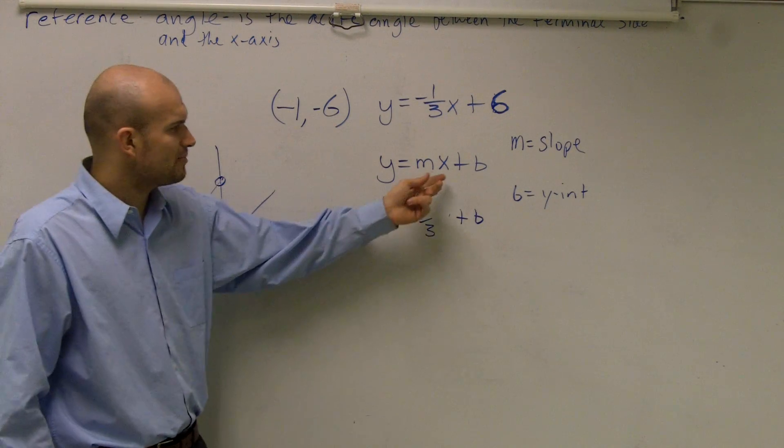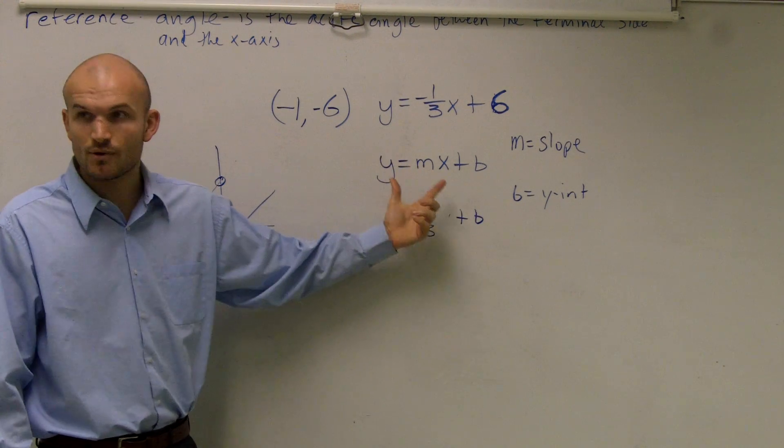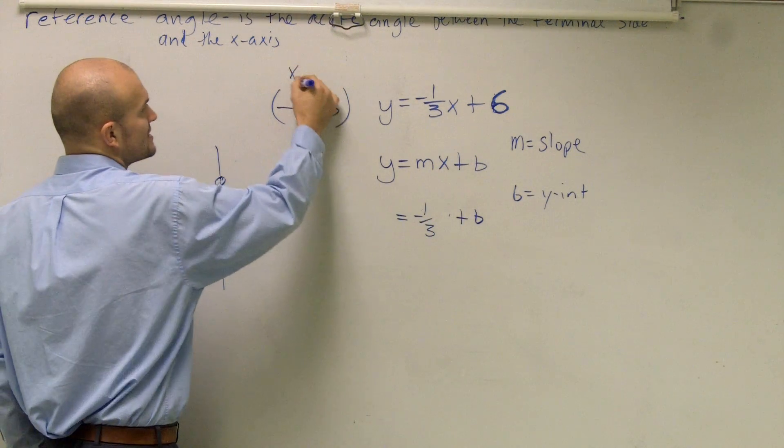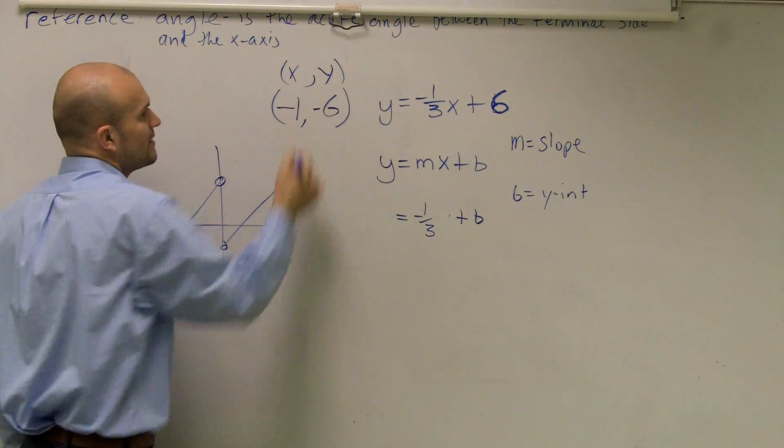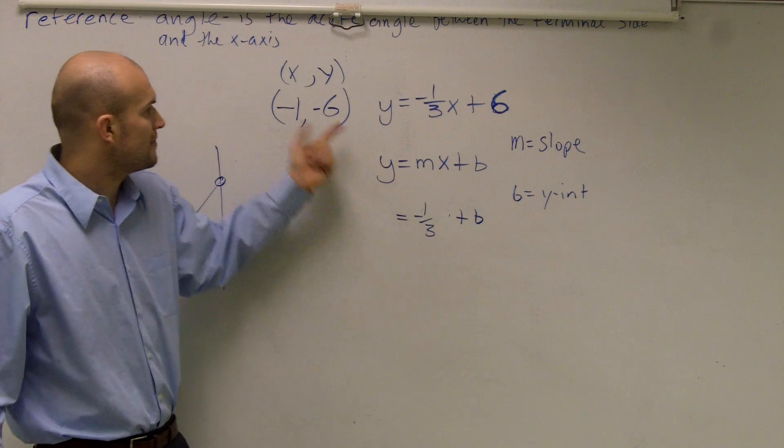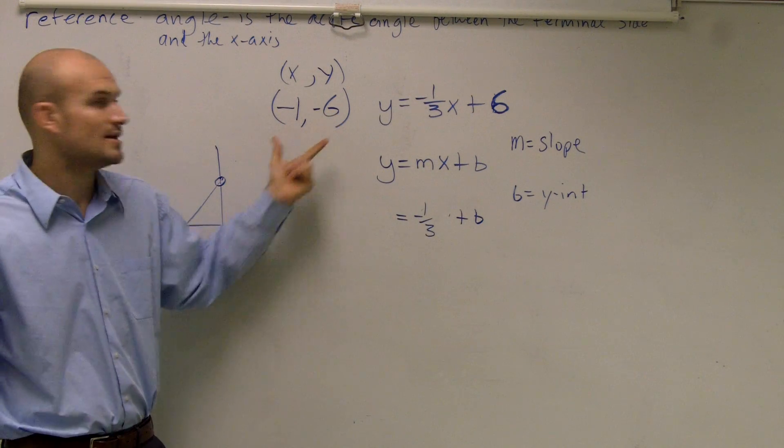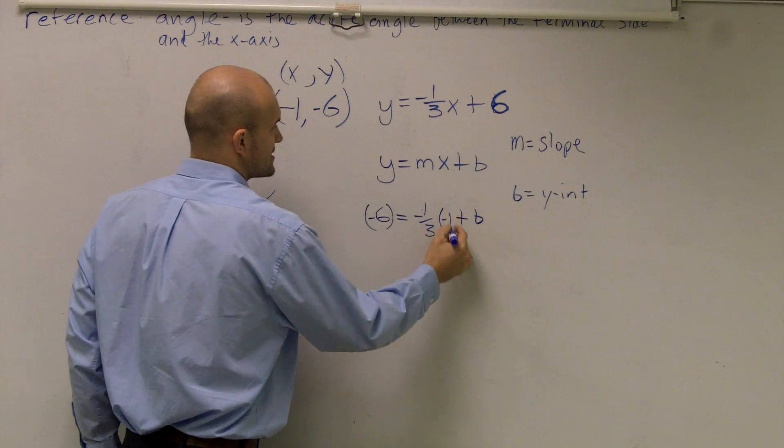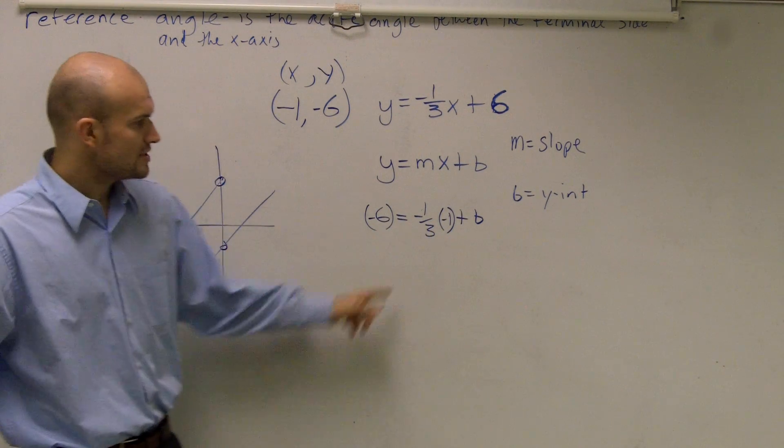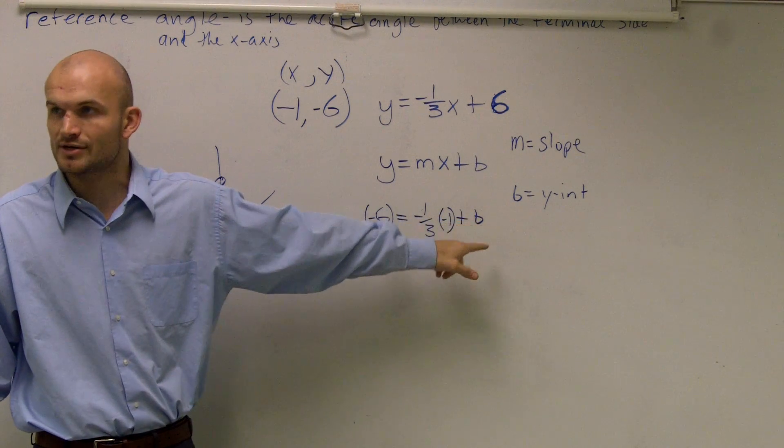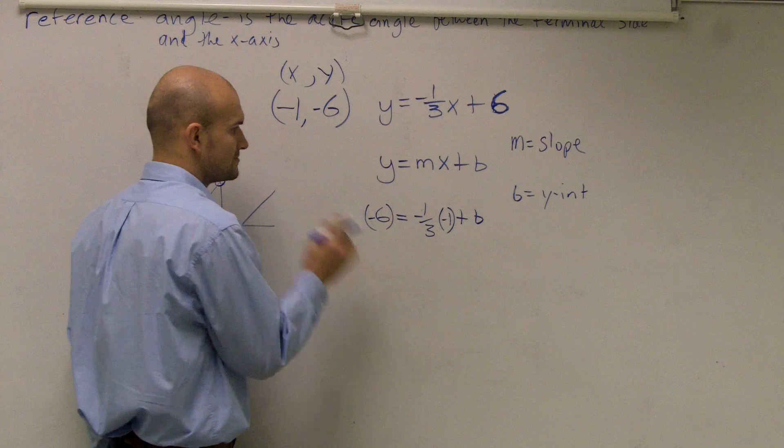Now, you might say, well, what can we plug in for X and Y? Remember, X and Y represent coordinate points on that line. Well, the problem says, I want to find a parallel line, that means it has the same slope, that goes through this point. That means you can write in these coordinate points for your X and your Y. So now I have my Y, my X, and my slope, but I still don't know what the Y-intercept is.